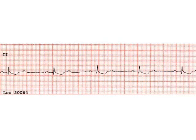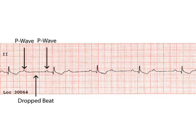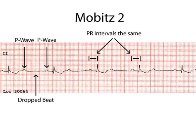Here is an example of an interesting rhythm. Students might want to hit the pause button, try to interpret the strip first, and then turn it back on. Looking at the first strip, starting on the left-hand side, I see a P wave, a QRS, a P wave. There are two P waves with a dropped beat in the middle: a P wave, QRS, inverted T wave, a P wave, and then another P wave. This would be an example of a heart block called a Mobitz II. The definition of a Mobitz II is that the PR intervals are always the same prior to a dropped beat.